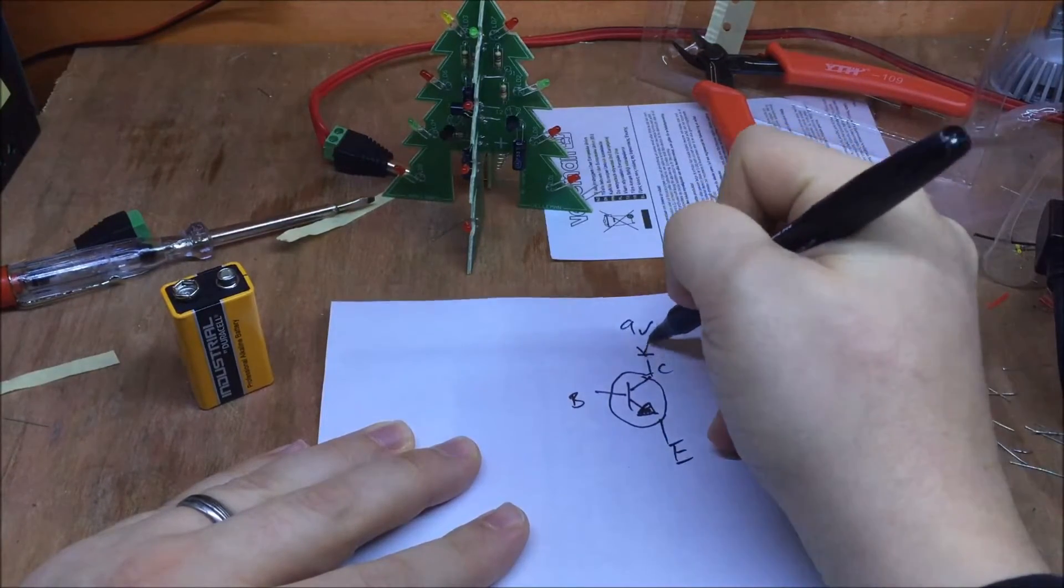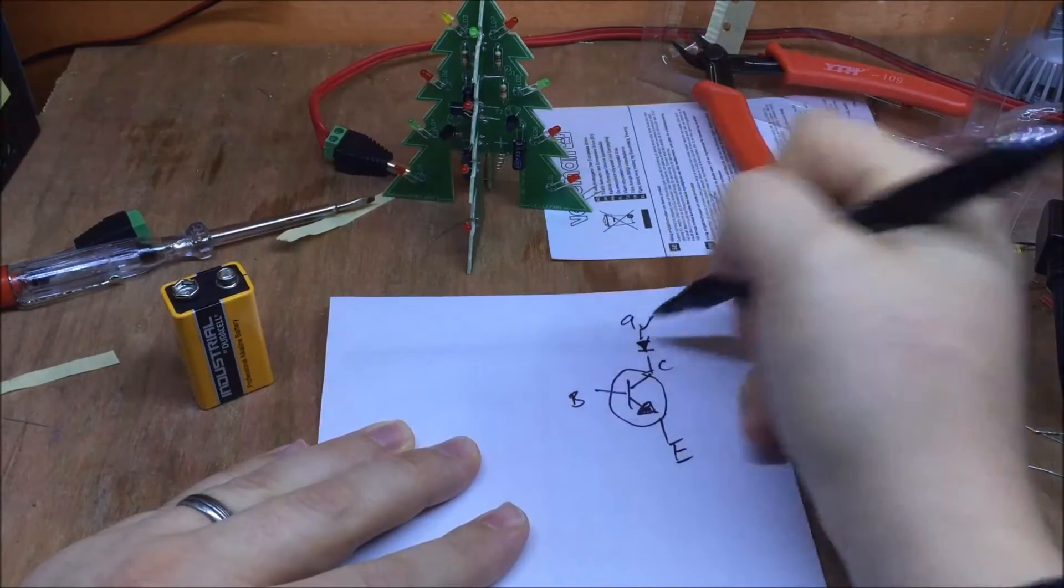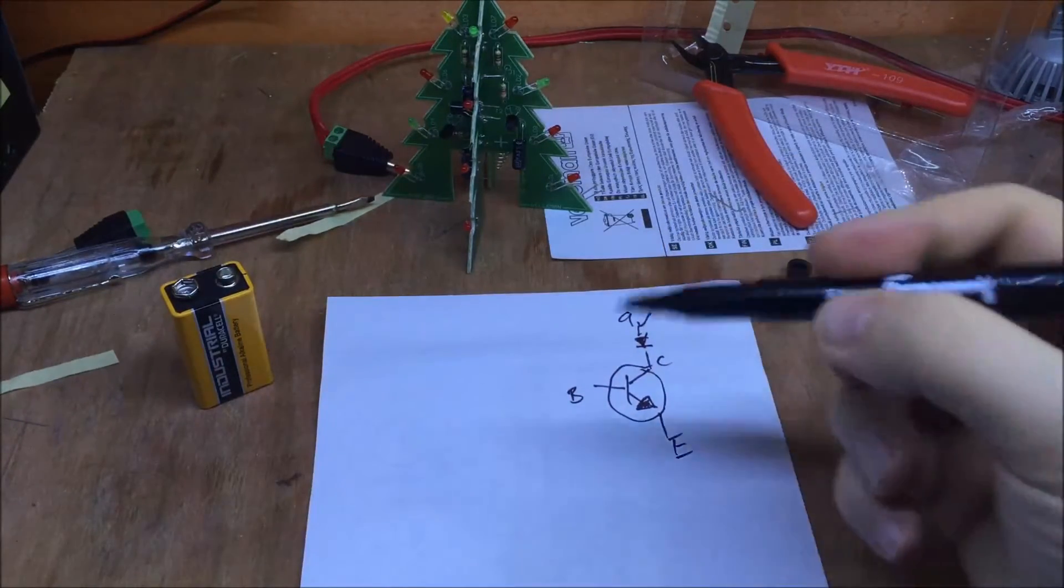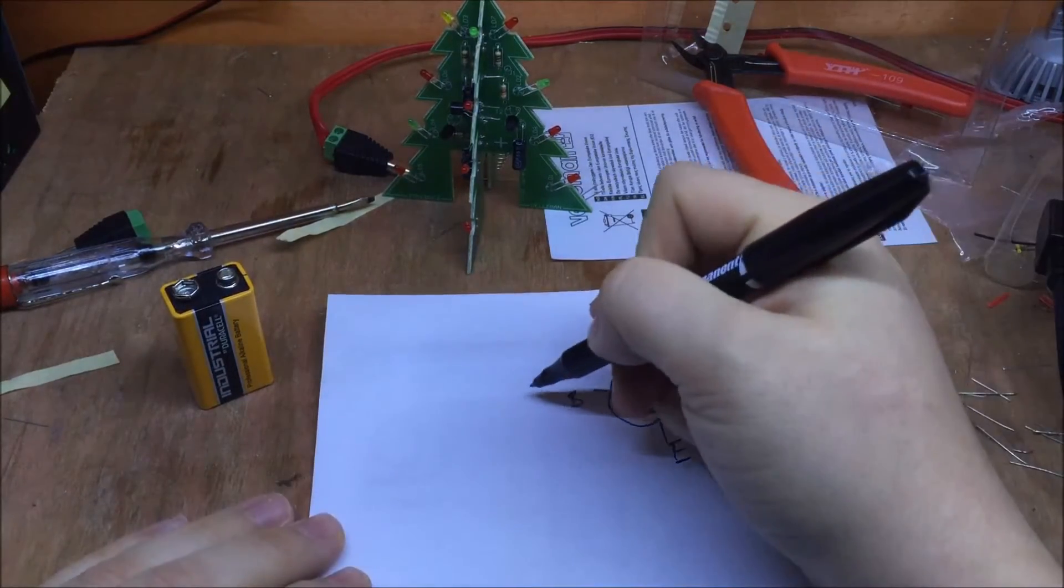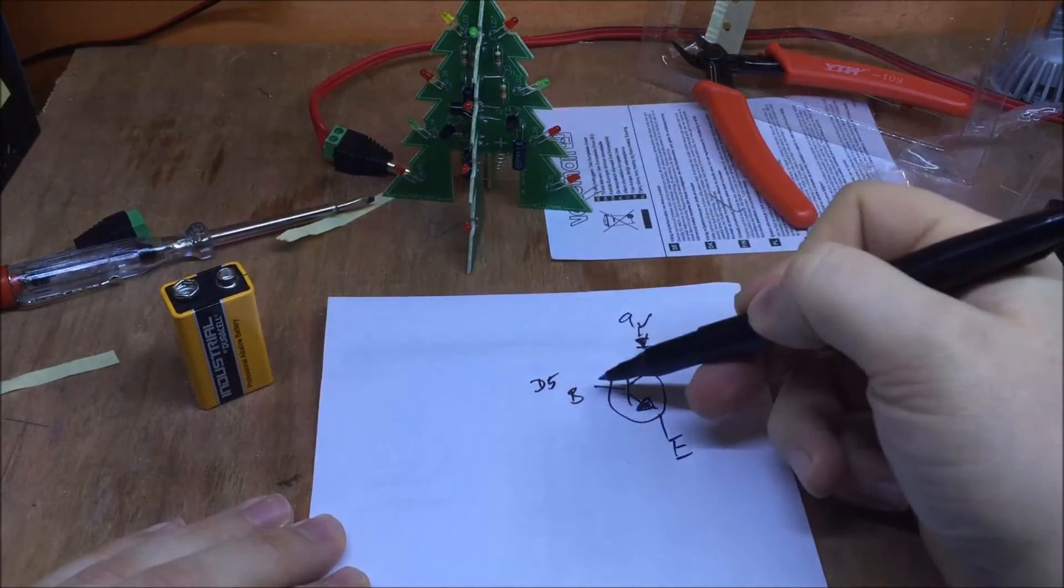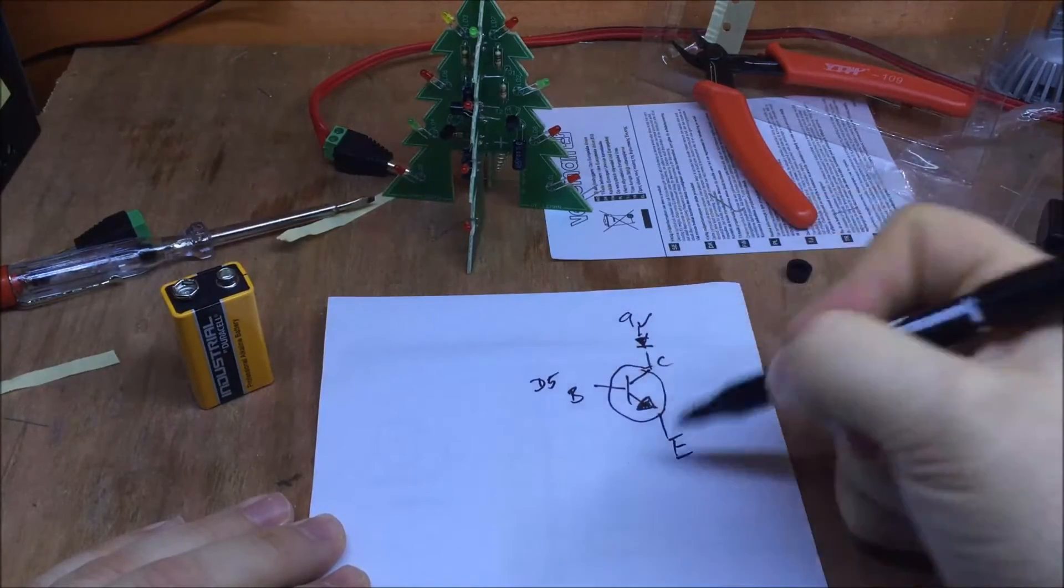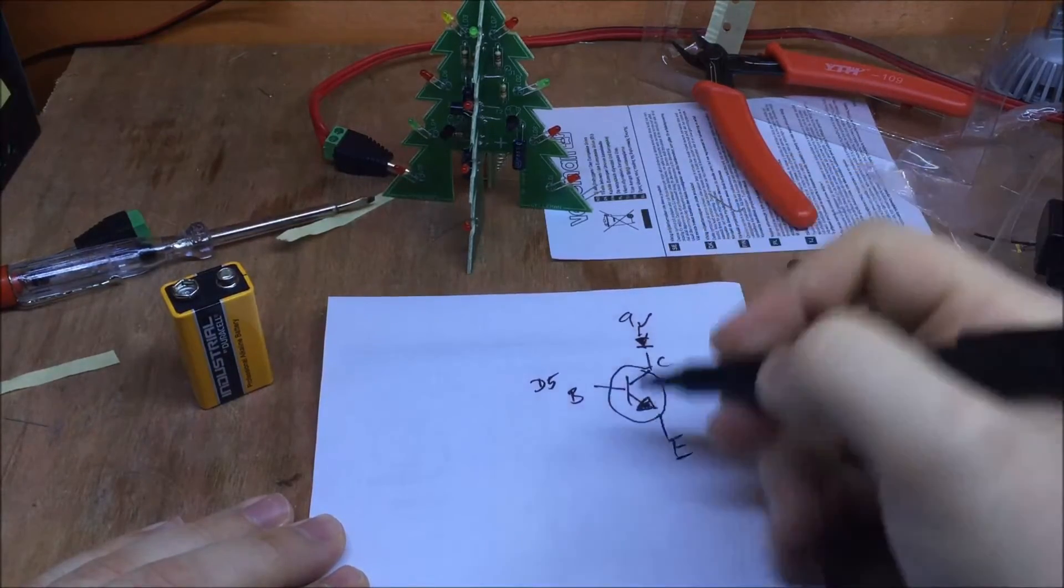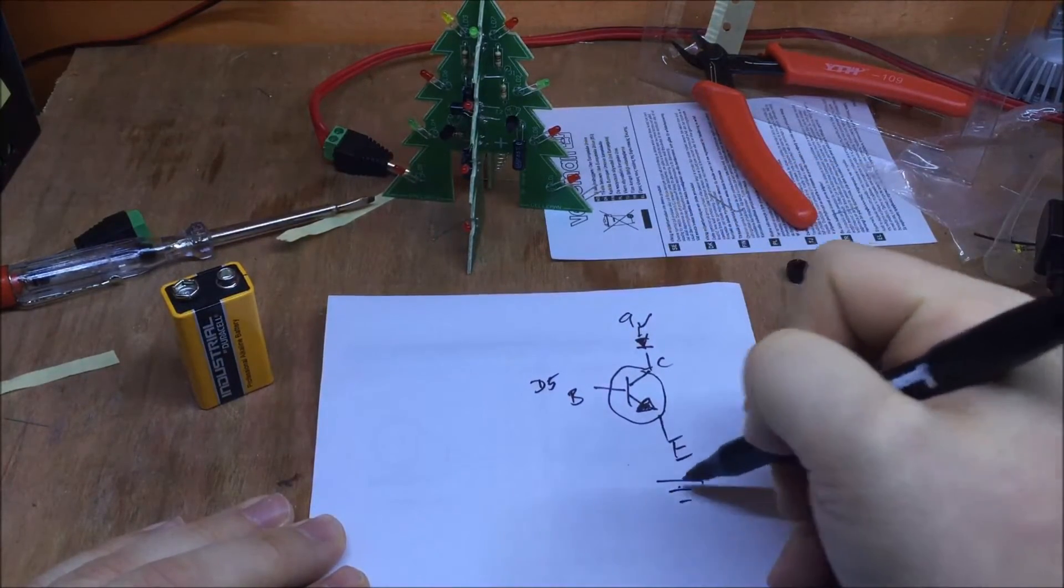And obviously my LEDs, according to that schematic, are up here. So my understanding is if I put the Arduino, I don't know, digital pin 5 here, it can draw an awful lot of current from the pin down to ground, which is here.